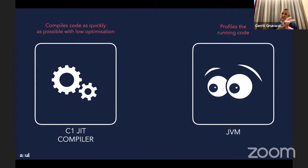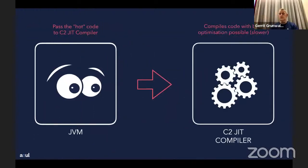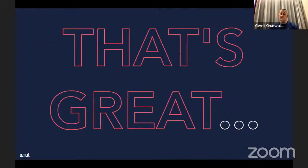The JVM then starts profiling the compiled code with lots of hooks checking for hot code — things called very often. If it detects that and reaches a specific threshold, it passes the hot code to the C2 JIT compiler, formerly known as the server compiler. This one creates highly optimized code — it's a beast. It's complex and takes longer to compile, but the code it produces is very fast. This is how the whole thing works, allowing runtime optimization of running code.